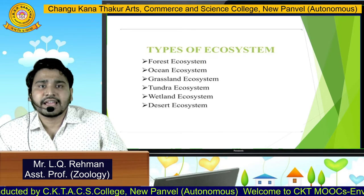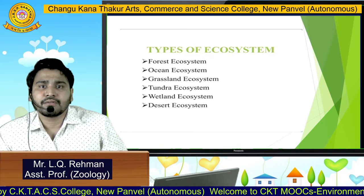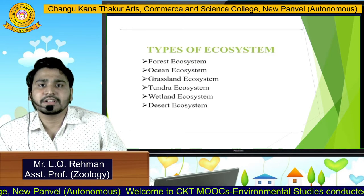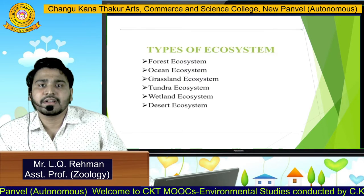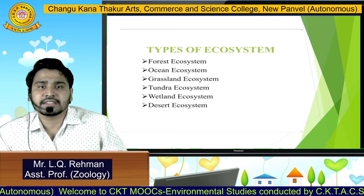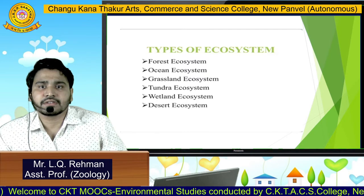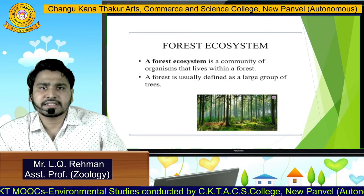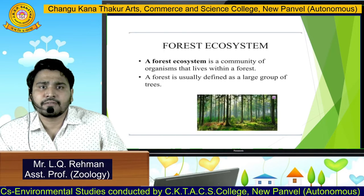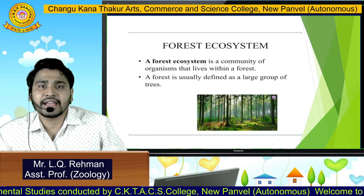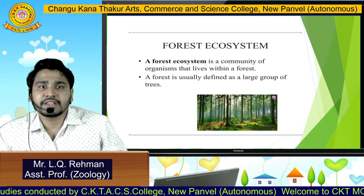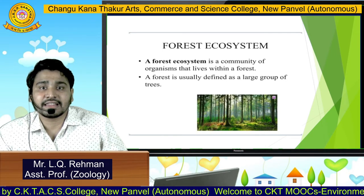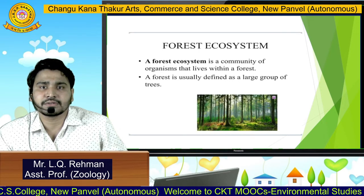There are few types of ecosystems: forest ecosystems, ocean ecosystems, grassland ecosystems, tundra ecosystems, wetland ecosystem, and desert ecosystem. We will see these types one by one. The first one is forest ecosystem. A forest ecosystem is a community of organisms that lives within a forest. A forest is usually defined as a large group of trees or large number of trees together.